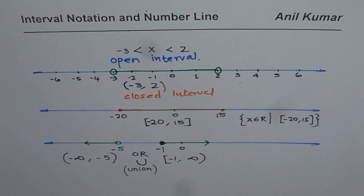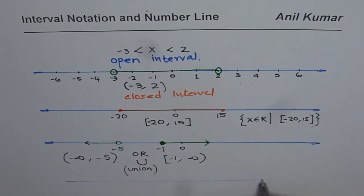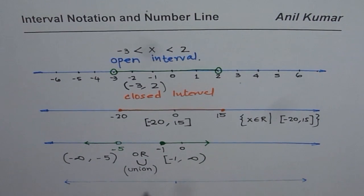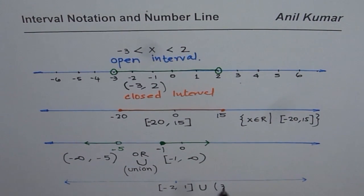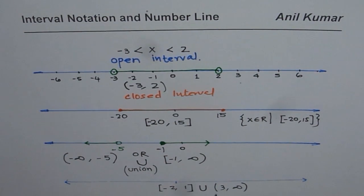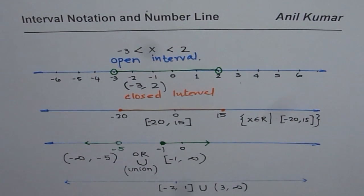I hope it is now clear how to represent real numbers with interval notation. Let me give you a question to practice. This time we do the reverse: given an interval notation, represent it on a number line. The interval is minus 2 to 1, both included, union 3 to infinity, both not included. On the number line, represent all the real numbers from minus 2 to 1 both included, or between 3 to infinity. I hope with this you get a good idea about interval notation.